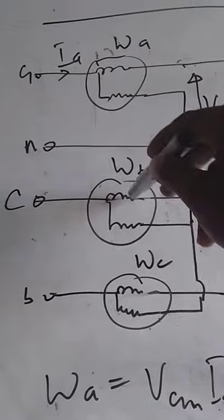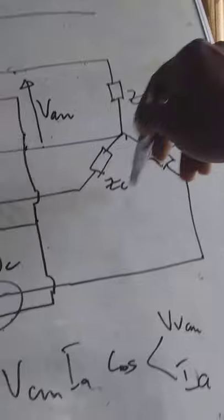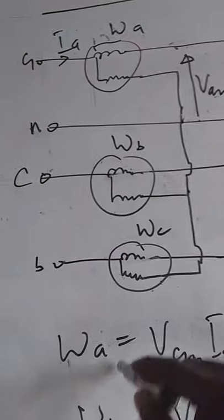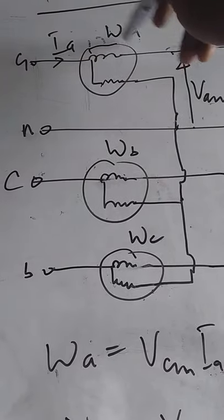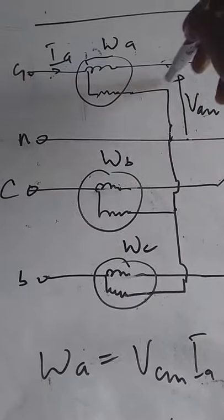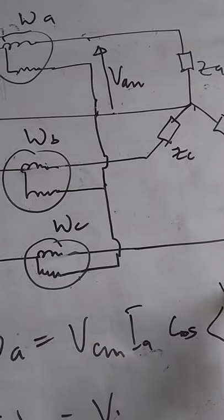Then you measure the power in each of the watt meters, then you add it together. That gives you the total power consumed by the load. So each watt meter, Wa for example, will give you the voltage Van and the current Ia. So that gives you Van Ia cos φan, that is the angle between Van and Ia.